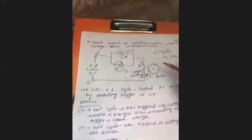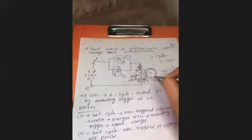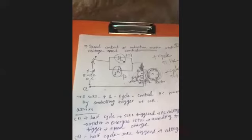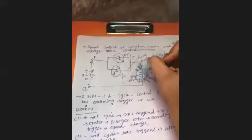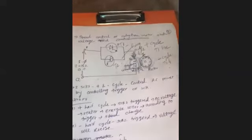One by one, alternately, each SCR is turned on per cycle. When an SCR is on, current passes through the stator, generating a magnetic field, and the rotor produces EMF. By changing the firing angle of T1 and T2, the current increases or decreases, controlling the motor speed.